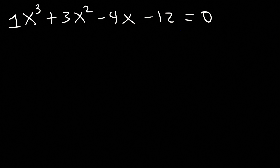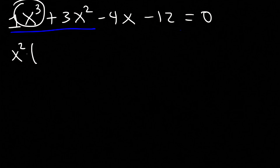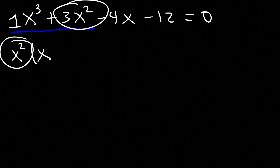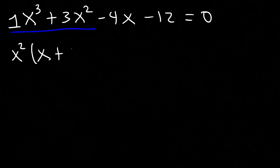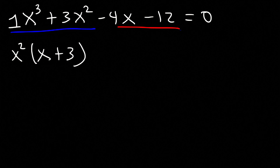So let's take out the GCF in the first two terms. The greatest common factor is x squared. x cubed divided by x squared is x, and 3x squared divided by x squared is 3. Now in the last two terms let's take out the GCF as well — the greatest common factor is negative 4. Negative 4x divided by negative 4 is x, and negative 12 divided by negative 4 is plus 3.